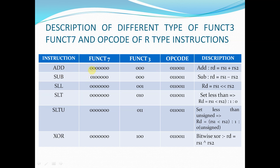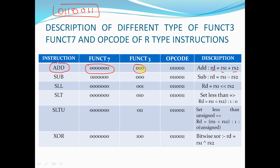Looking at this table: for the ADD instruction — rd = rs1 + rs2 — the funct7 value is all zeros (0000000), funct3 is 000, and the opcode is 0110011. The opcode is the same for all R-type instructions. This table will be used to develop our processor code.